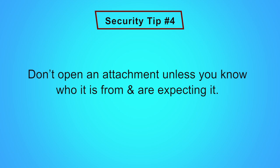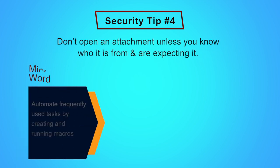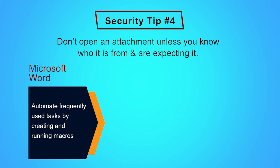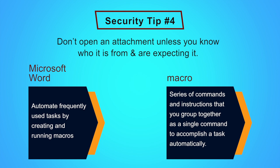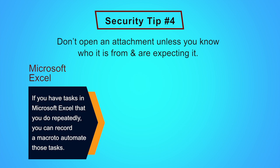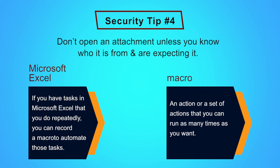Security tip number four: enable macros only when you are sure of the document or worksheets. Be cautious about email messages that instruct you to enable macros before downloading Word or Excel attachments. In Word, you can automate frequently used tasks by creating and running macros — a macro is a series of commands and instructions grouped together as a single command to accomplish a task automatically. Similarly in Microsoft Excel, you can record a macro to automate repeated tasks. Many times hackers use Excel and Word as carriers of viruses, worms and other threats which can damage your system or steal your data or credentials.